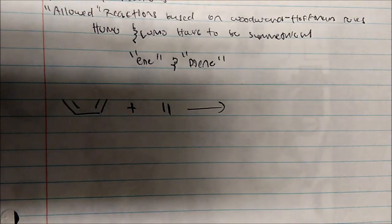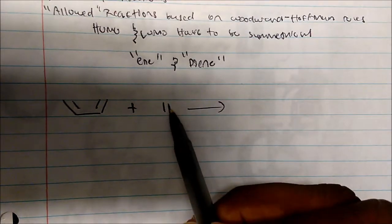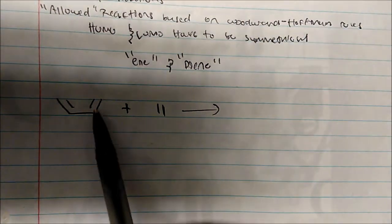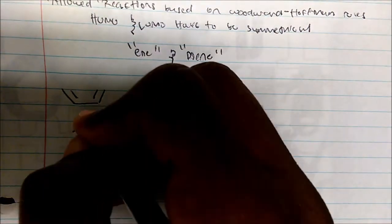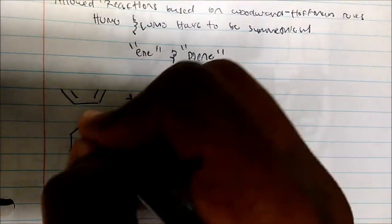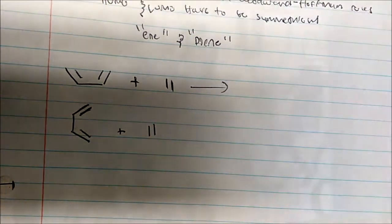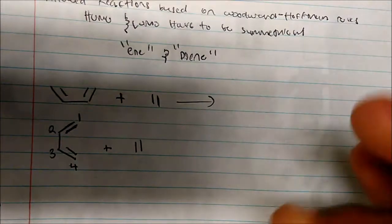So let's say we want to react this diene with this alkene. What would be the reaction product? Notice I have my diene and my alkene — two double bonds in the diene. The way you do this chemistry is you actually rotate your diene vertically and redraw it. I'm going to leave my ene as is. This is where you want to count your carbons.